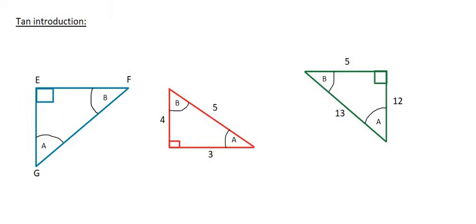And the last trig ratio that we're going to look at is tan. So when Greeks were talking about tan, what they meant by that was the opposite side of the angle divided by the adjacent.